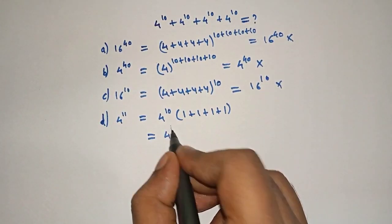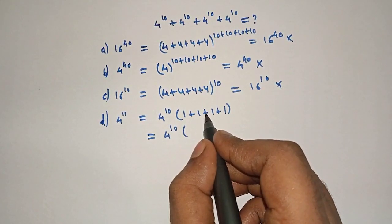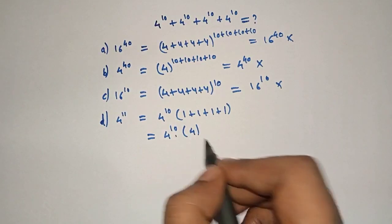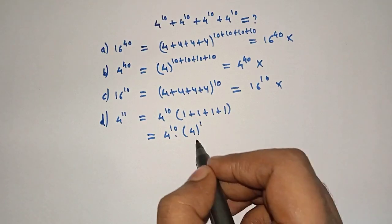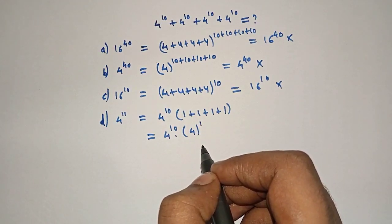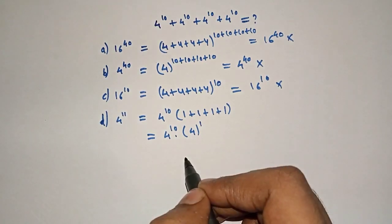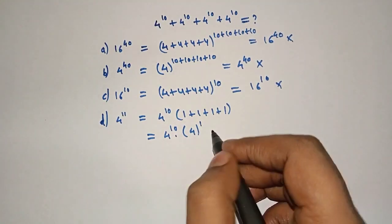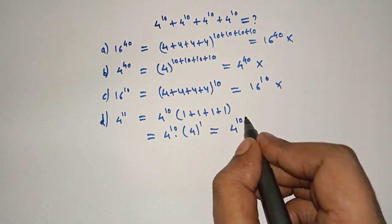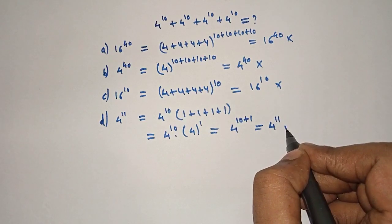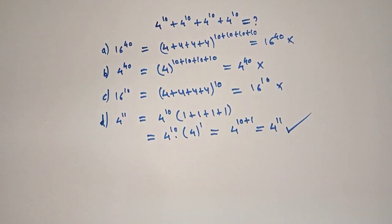The bracket gives 1 plus 1 plus 1 plus 1, which equals 4. Now 4 can be written as 4 raised to 1. Since the bases are equal, we can add the powers: 4 raised to 10 plus 1, which equals 4 raised to 11. This is the right answer! Don't forget to subscribe to my channel and press the notification bell.